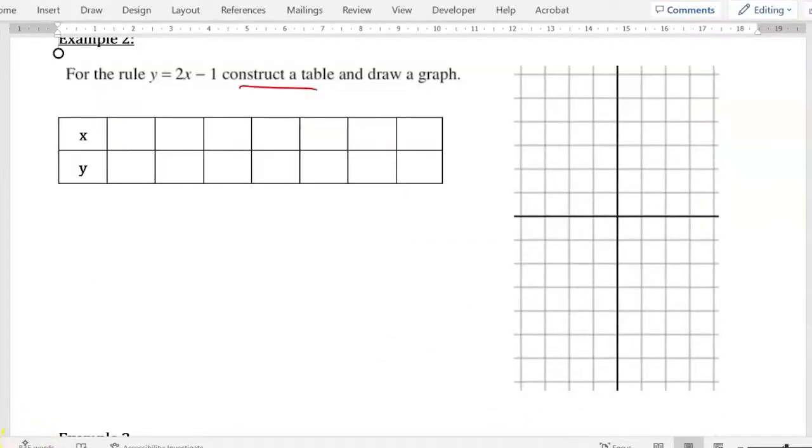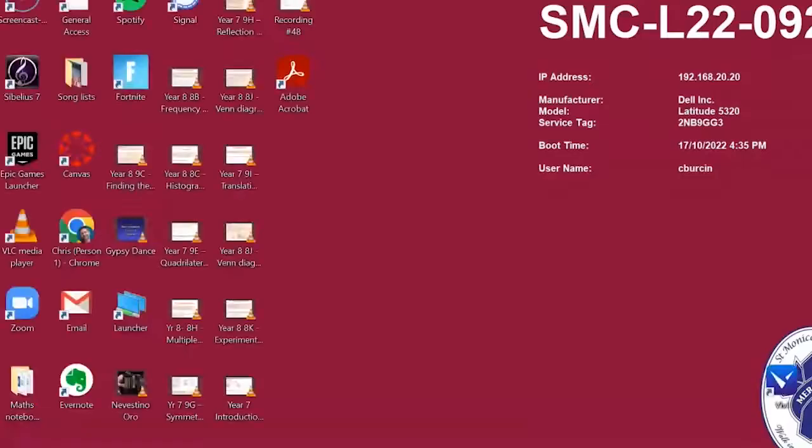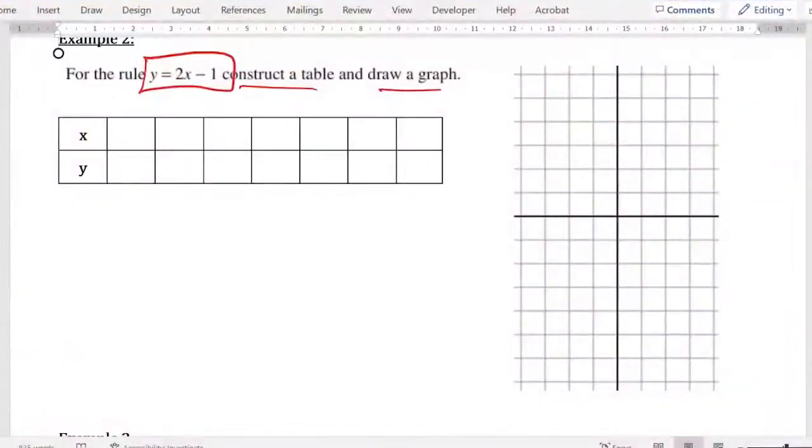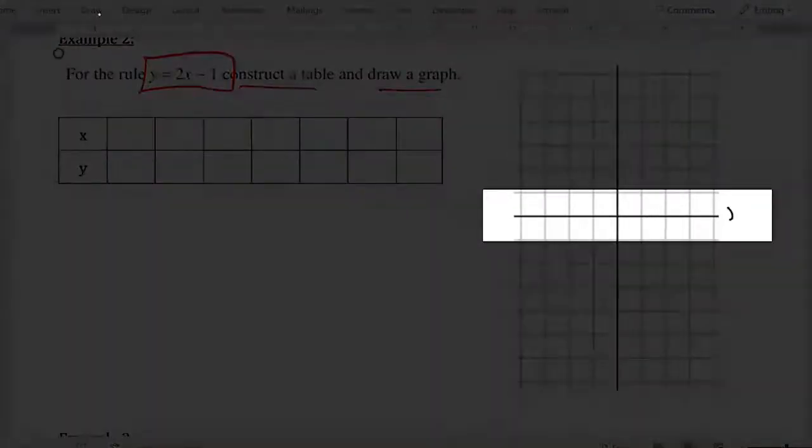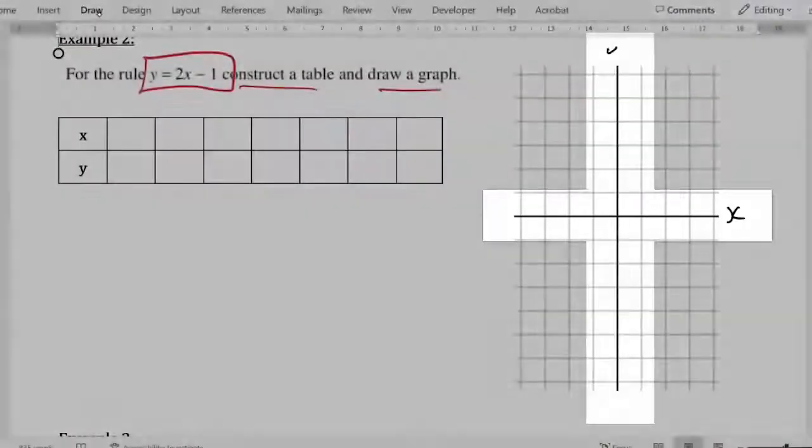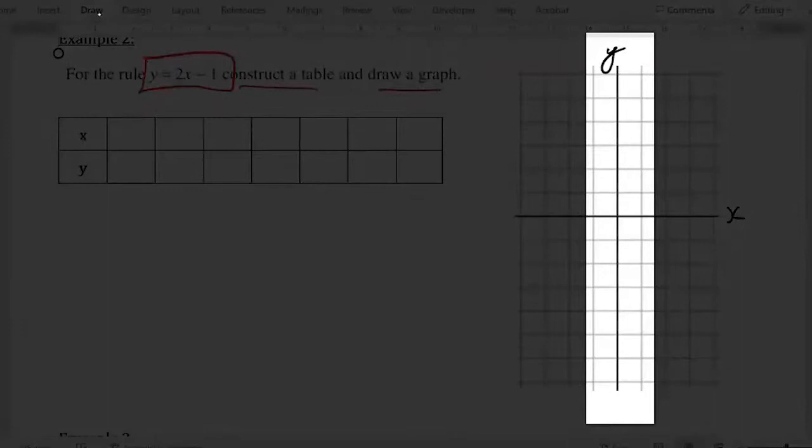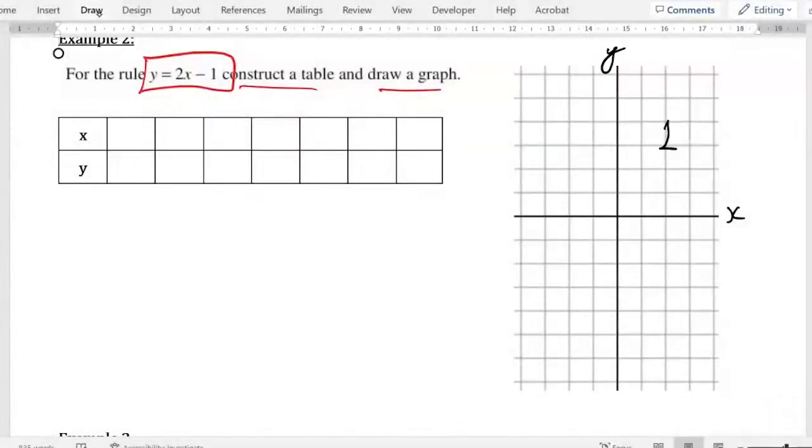So now we're going to construct a table and we're going to draw a graph based on the rule y equals 2x minus 1. So let's remind ourselves what the x and y axes are. X runs this way and y runs up to the sky. And this is the first quadrant here, second, third and fourth quadrants.